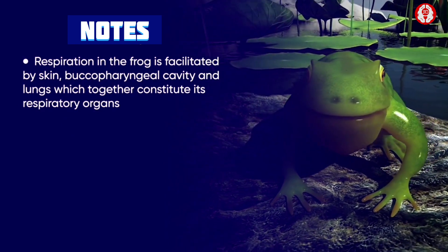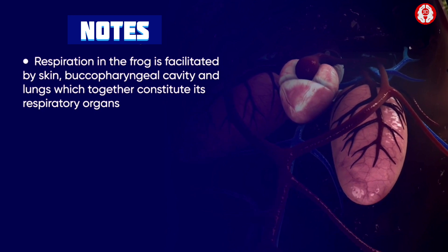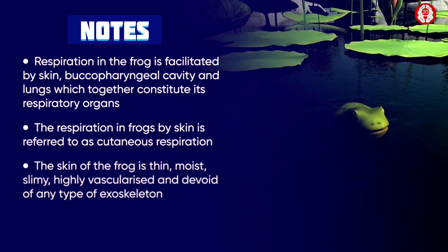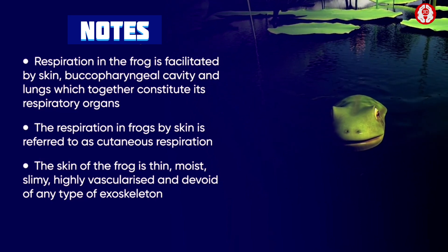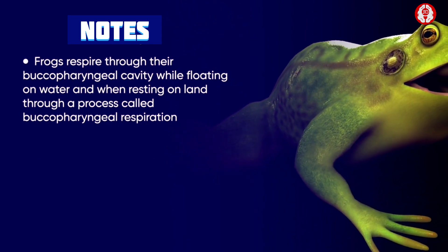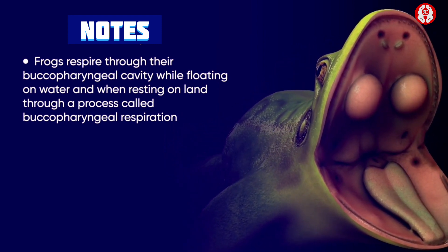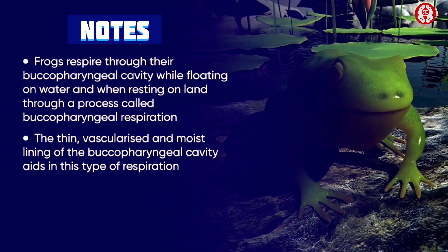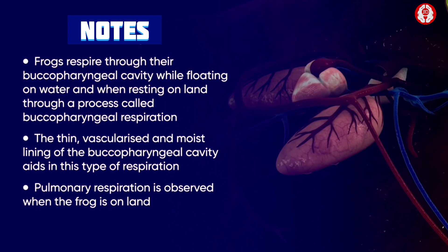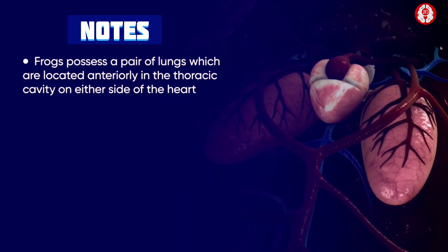In summary, respiration in the frog is facilitated by the skin, buccopharyngeal cavity, and lungs. Skin respiration is cutaneous respiration; the skin is thin, moist, slimy, highly vascularized, and devoid of exoskeleton. Buccopharyngeal respiration occurs while floating on water or resting on land. Pulmonary respiration is observed when the frog is on land, with a pair of lungs located anteriorly in the thoracic cavity on either side of the heart.